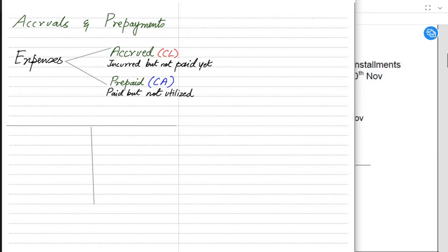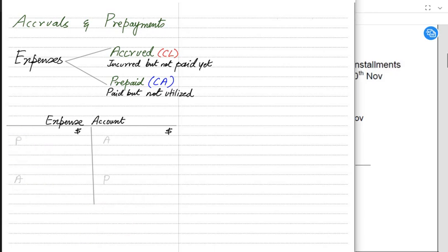After understanding accruals and prepayments, let's look at how to answer an examination question. Whenever accruals and prepayments are tested, we need to prepare an expense account. We use a mnemonic for this: P-A-A-P — Prepaid, Accrued, Accrued, Prepaid — which we can pronounce as the 'PAAP account'.